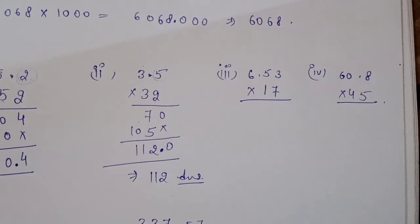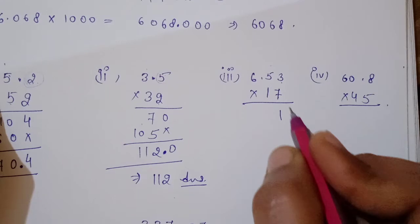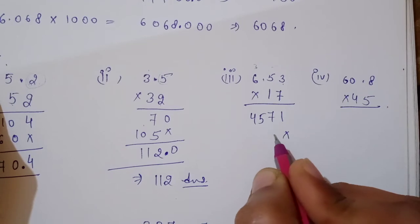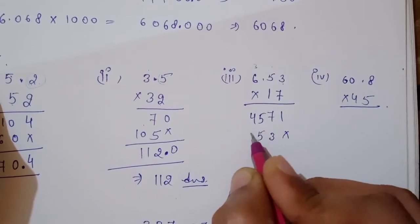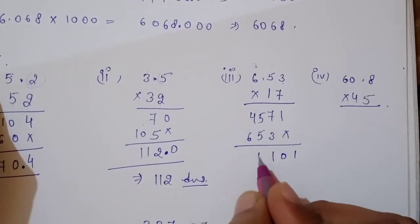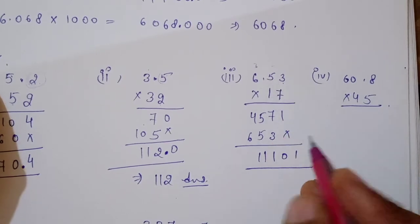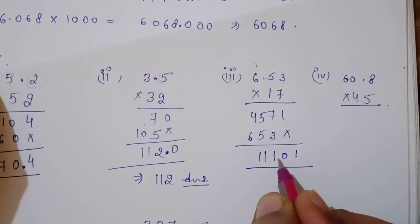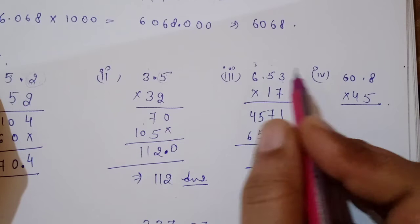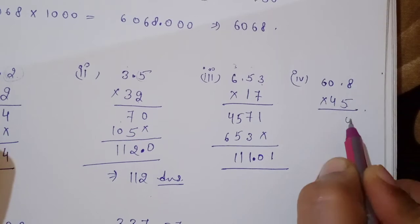Now 6.53 × 17: 7×3=21, 7×5=35, 7×6=42; then 1×3=3, 1×5=5, 1×6=6. Add the numbers: 1, 7, 3 → 10, 11; 7, 11. How many decimal places? Two. Put the decimal after two digits from the right — count one, two. During multiplication, ignore the decimal; place it at the end.